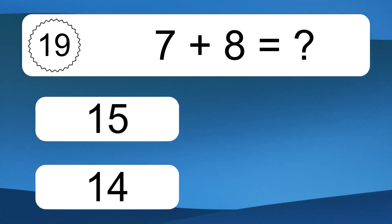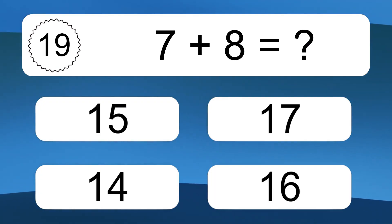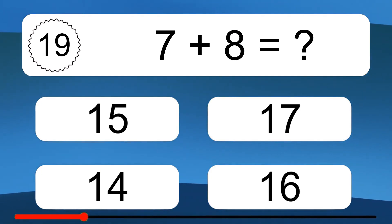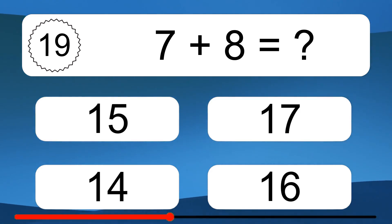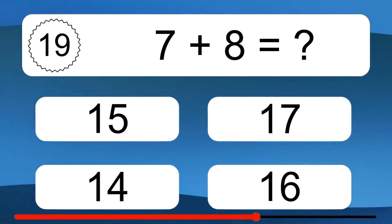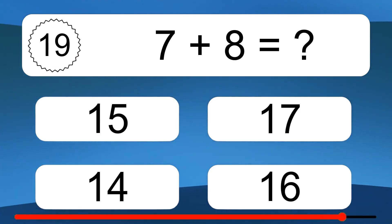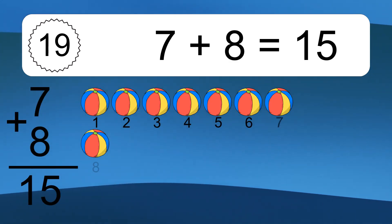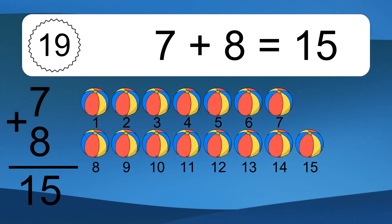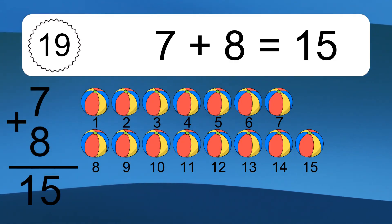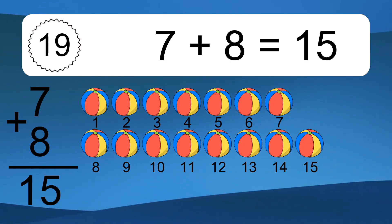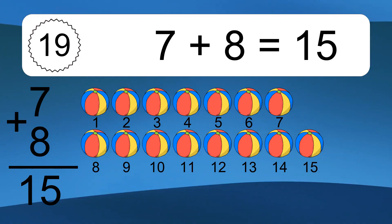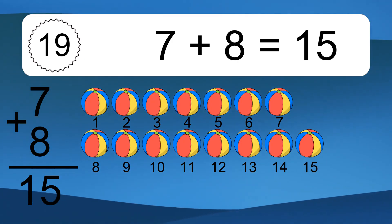7 plus 8 equals what? 7 plus 8 equals 15. Let's count it. 1, 2, 3, 4, 5, 6, 7, 8, 9, 10, 11, 12, 13, 14, 15.